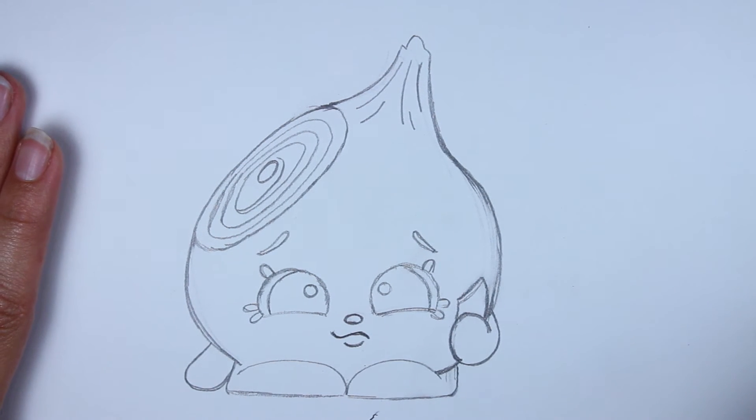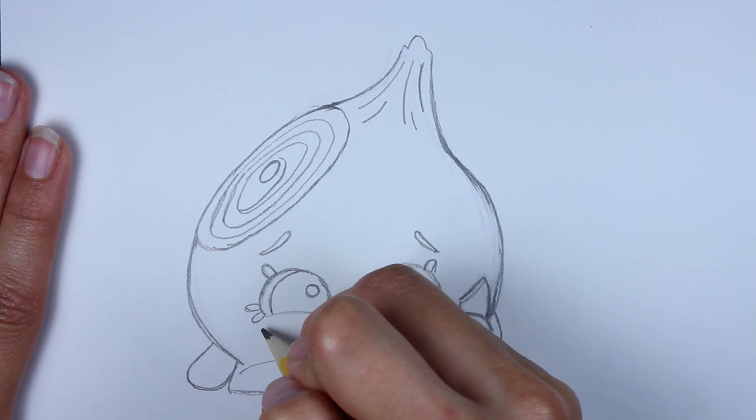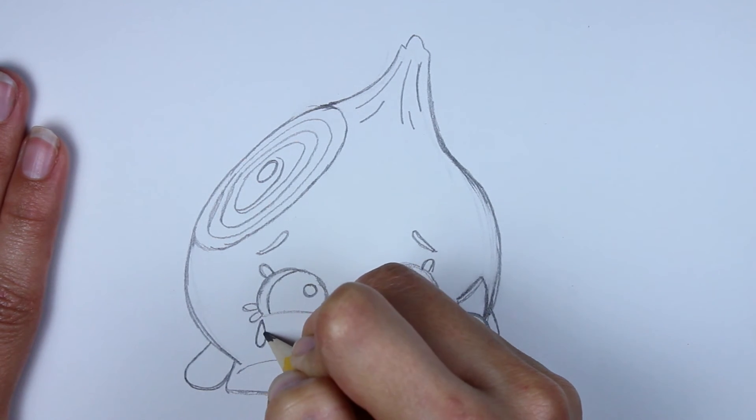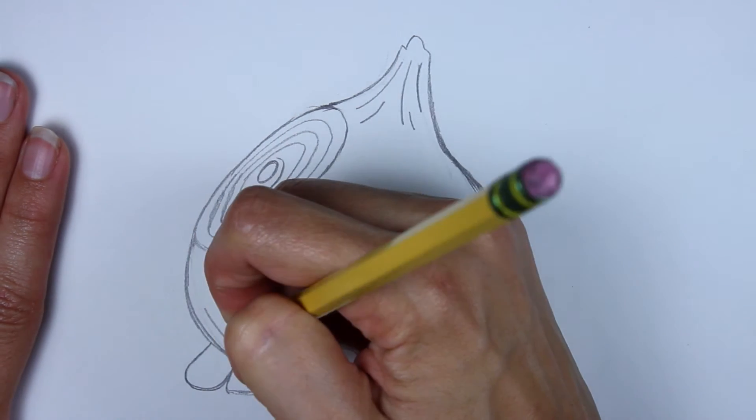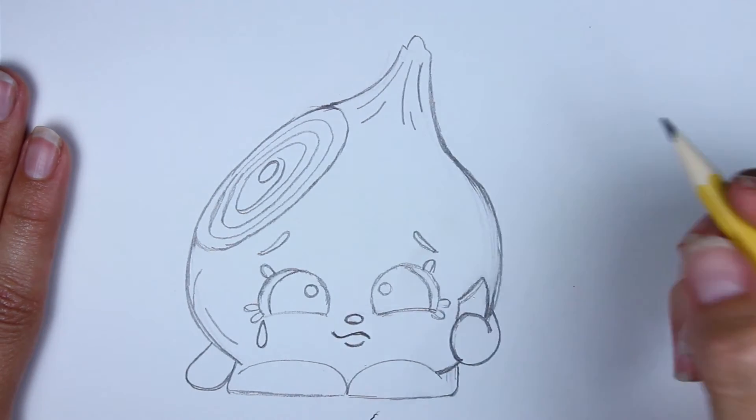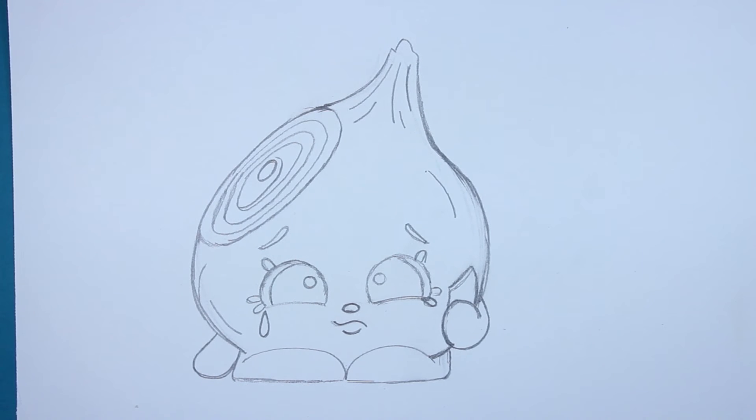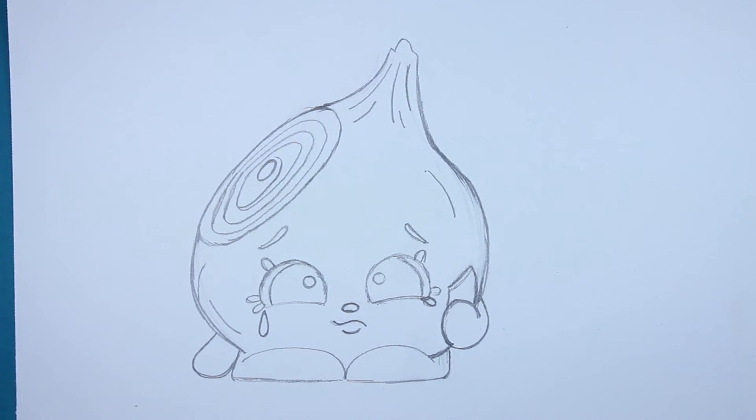And then let's not forget the little tear that Teary Onion has. Which is just like a little rain drop or a tear drop right over here. And then the last thing I want to do is just add a couple more lines that I see in the picture. Like that. Alright, guys. Well, that's it for Teary Onion. I think he's so, so cute. And now I'm going to give him some color.